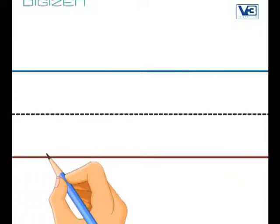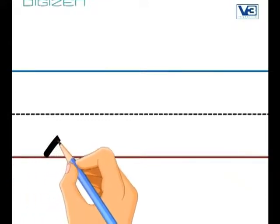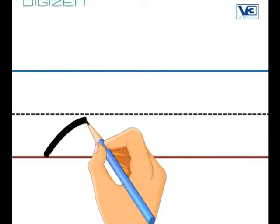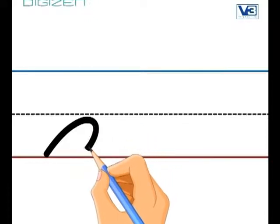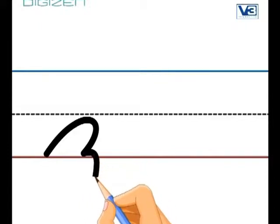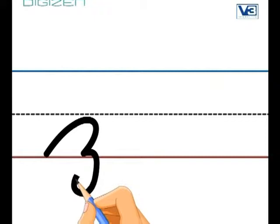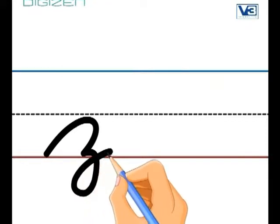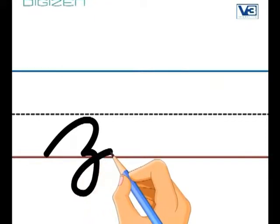To start our lowercase Z, we are going to be at that bottom line and then bounce up to the middle line and back down to the bottom. Now we are going to do a loop by going underneath and finishing it by crossing that bottom line.